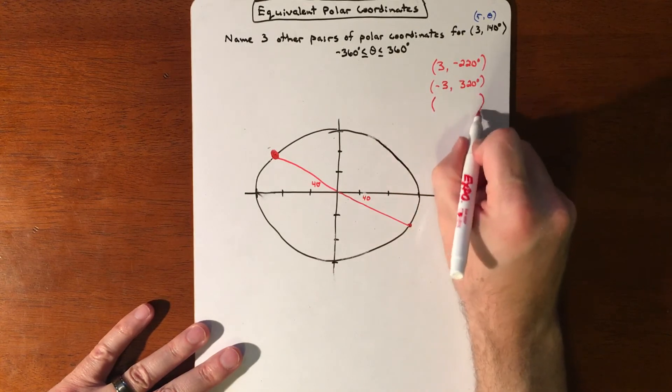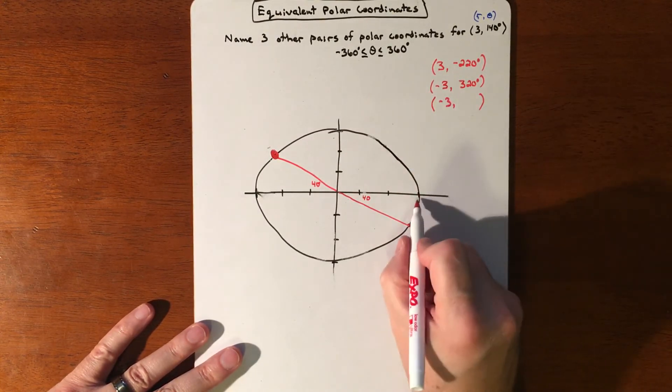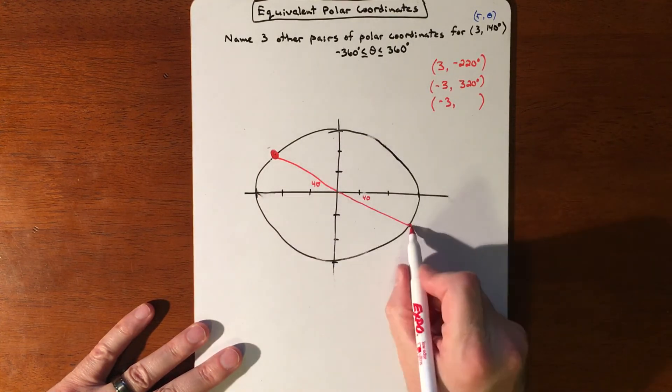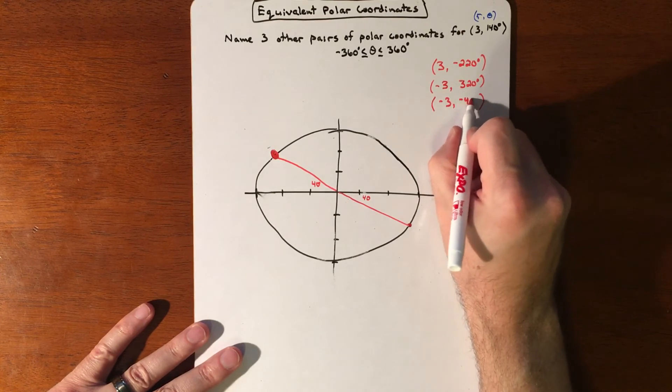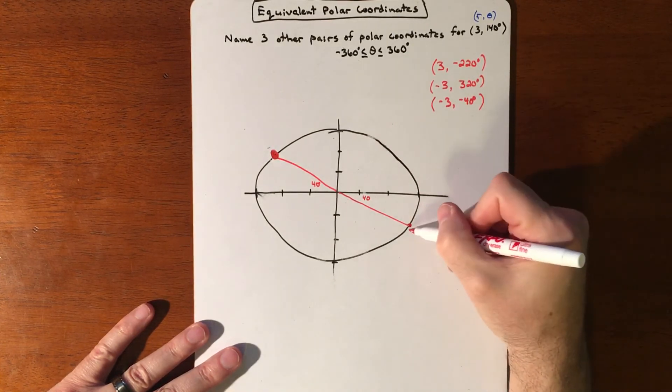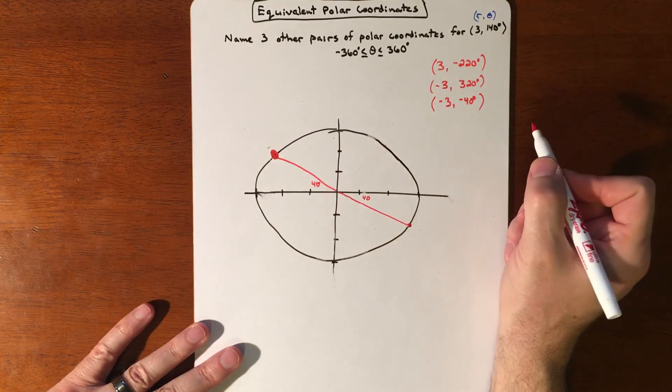So then that's one thing. But then you could also, to get here, go 320, but you can also go backwards. You could go negative 40. So if you went negative 40 and then reflected it over, that would take care of it as well.